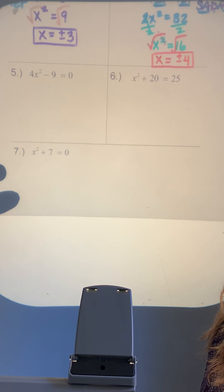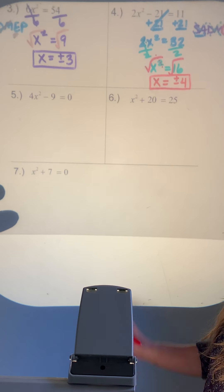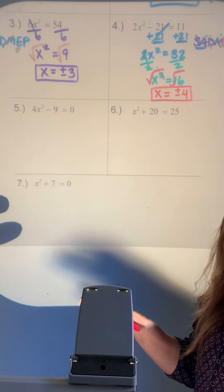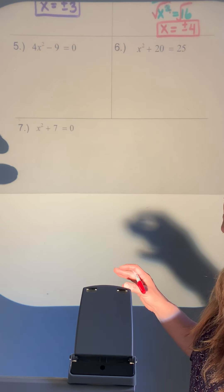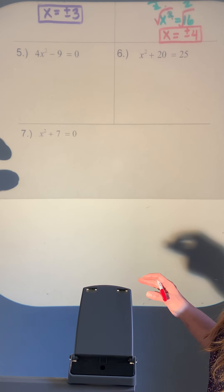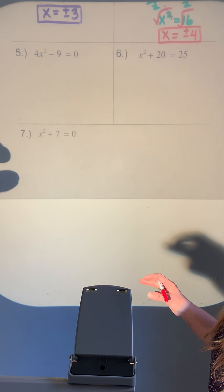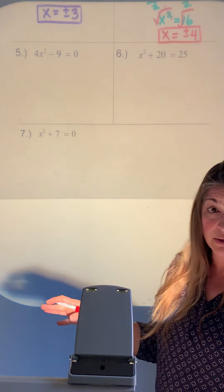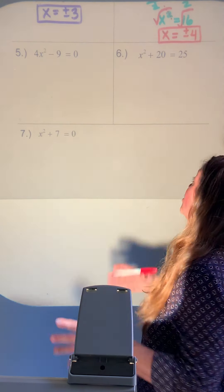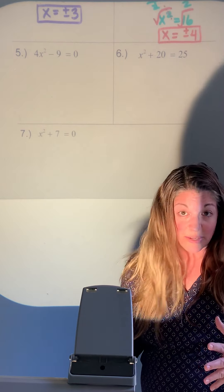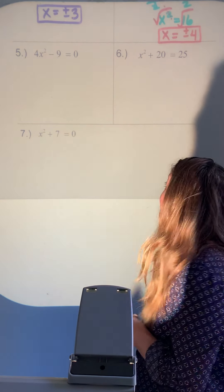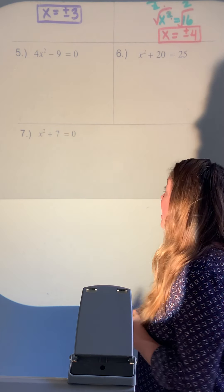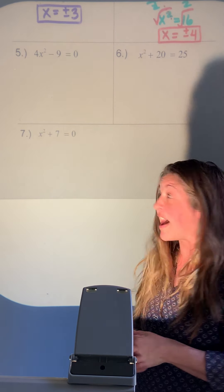Examples 5, 6, and 7 are no different than 3 and 4, but have a little extra twist. I wanted to go through them in case you see them in the future. For number 5, we follow the same steps as number 4 — first undo any addition or subtraction.